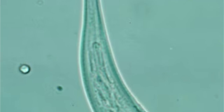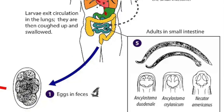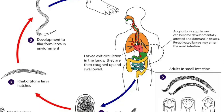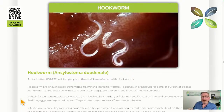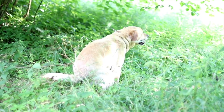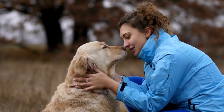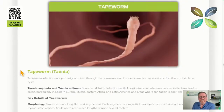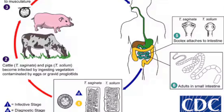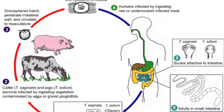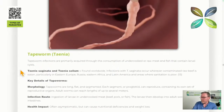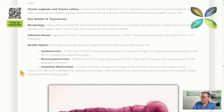Hookworm affects an estimated 800 million to 1.2 billion people. They have a visible hook shape, are soil-transmitted, and live in the intestines. They can be picked up on the feet of animals that have defecated on the ground and carried back into the house. Tapeworm, while less common, can be picked up in fish and pork — particularly pork is known to be the worst. Tapeworms can grow very, very long.